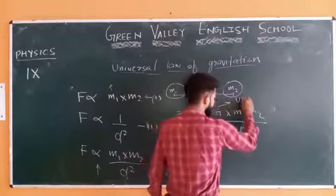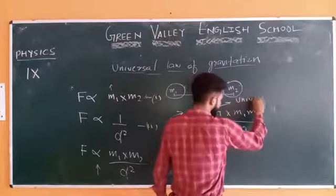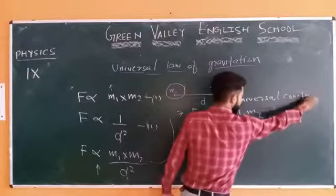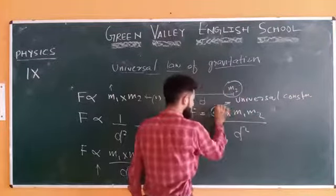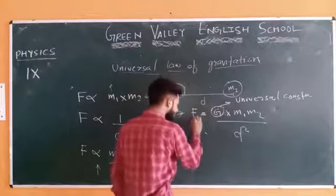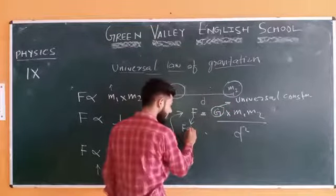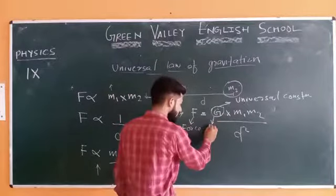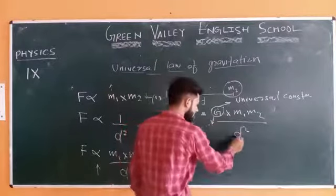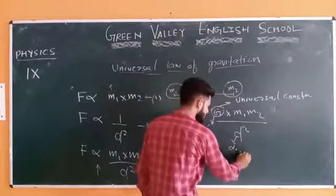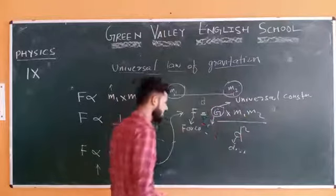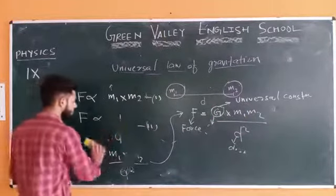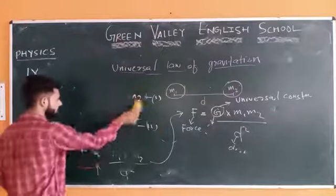So we put a constant term G, giving us F equals G times M1 times M2 divided by d squared. Now what is G? G is our Universal Gravitational Constant. F is force, G is a constant — the gravitational constant — d is the distance between them, and M1 and M2 are the masses. Now what will be the SI unit of G? Let's find it out.